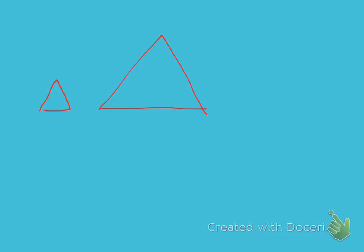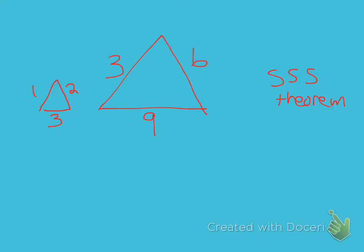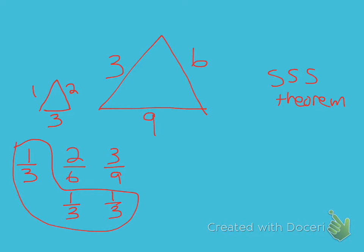Let's do another example that looks a bit different. We have sides 1, 2, and 3 corresponding to sides 3, 6, and 9. We're given three sides, so we might be able to use the side-side-side theorem if and only if the sides are proportional. Checking: 1 to 3 is one third, 2 to 6 simplifies to one third, and 3 to 9 simplifies to one third. We have a scale factor of one third, so we can use the side-side-side theorem. You're going to get a series of questions to check your understanding — make sure you click 'Mark as Done' when you're finished submitting your form.